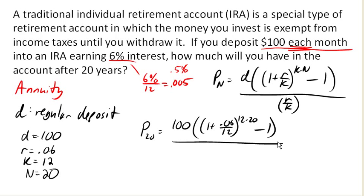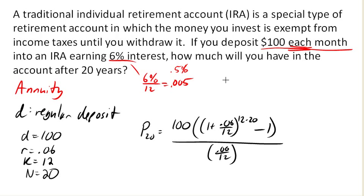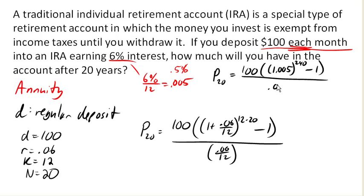The same rounding rules apply here as before — we don't want to round to less than 3 decimal places as we're evaluating. So this is 100 × (1.005^240 − 1) / 0.005. We can pull out our calculators, evaluate that, and we'll end up with $46,200 in our account after 20 years!